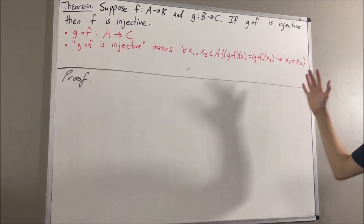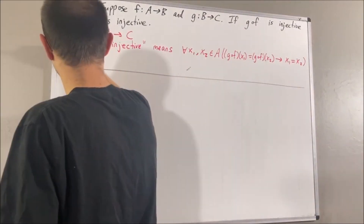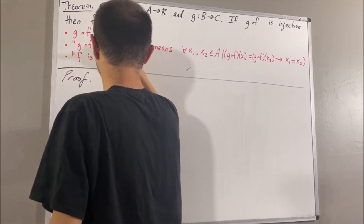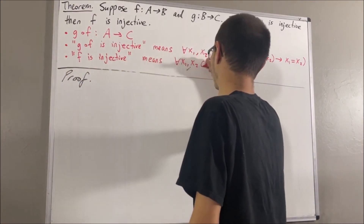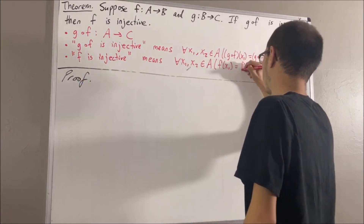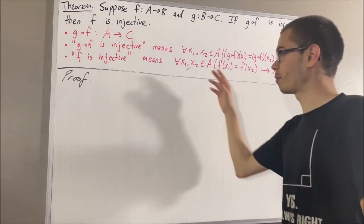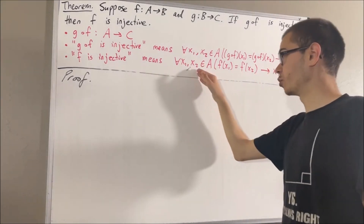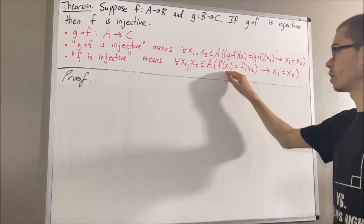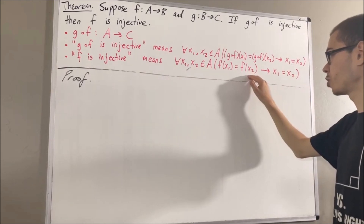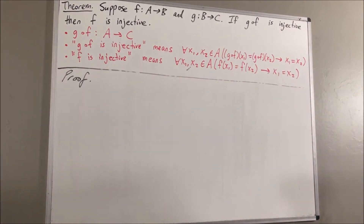Similarly, to say that f is injective means the following: for every two elements x1 and x2 in A, if f of x1 equals f of x2, then x1 is equal to x2.